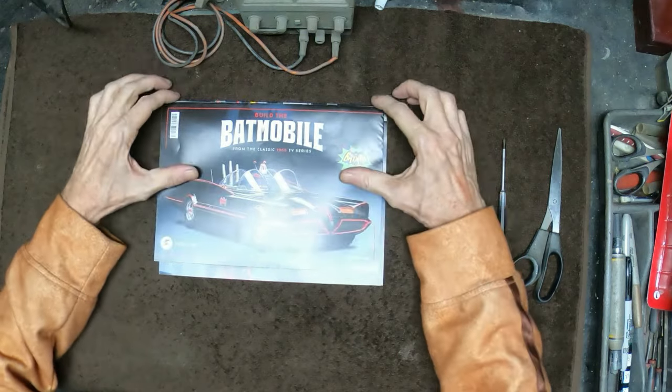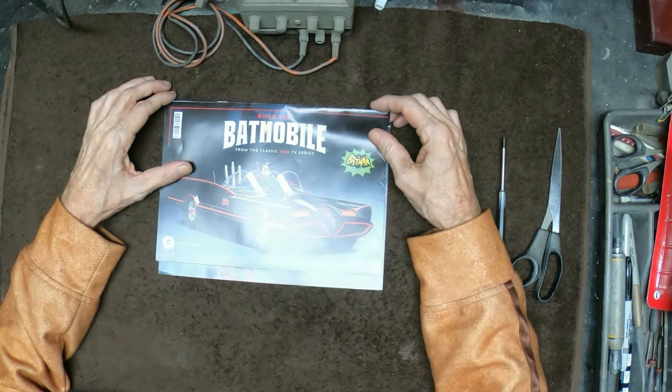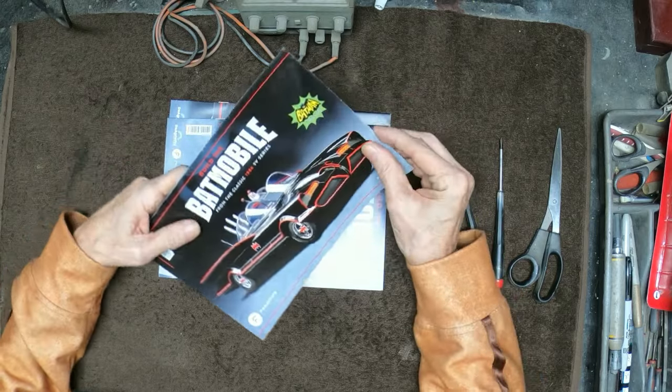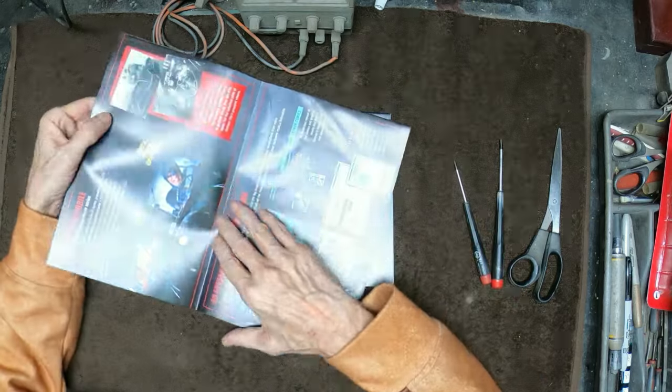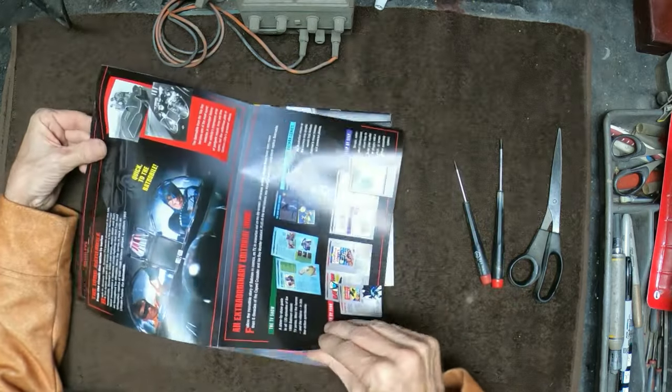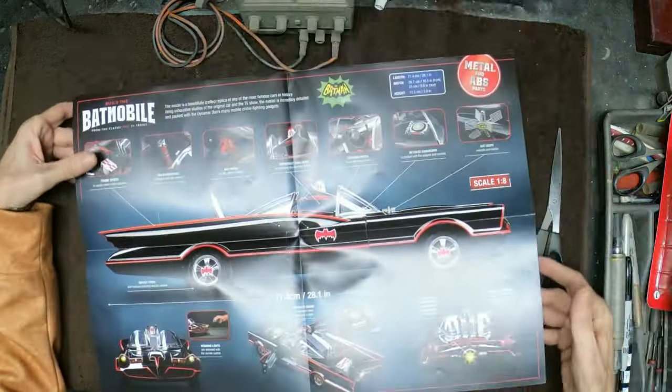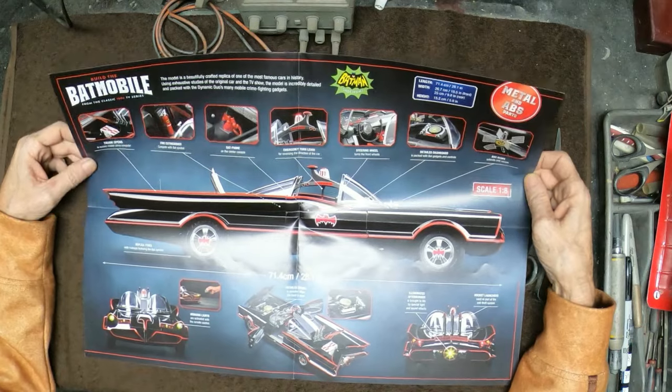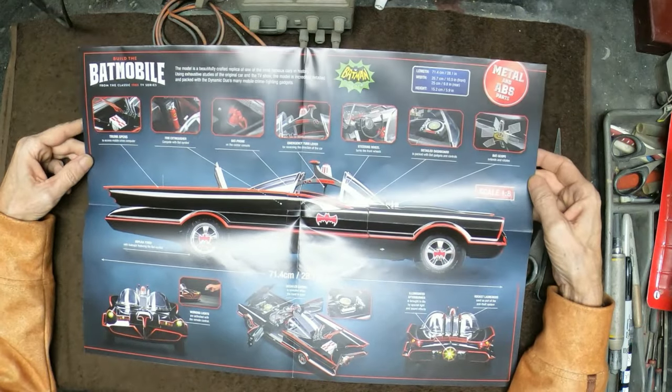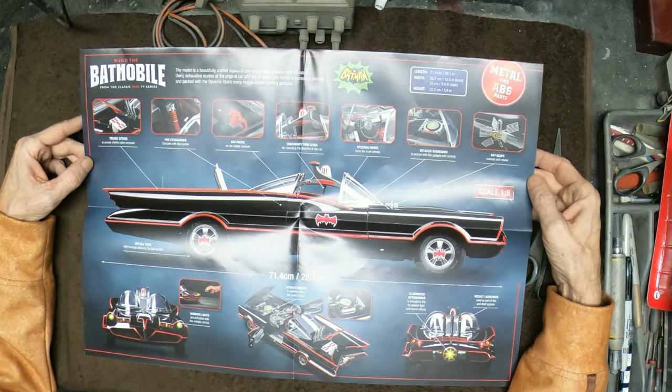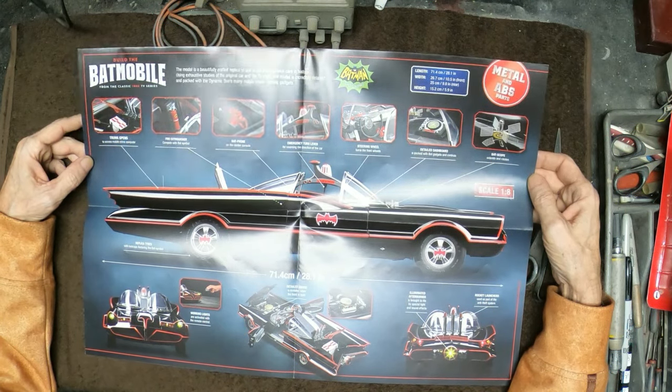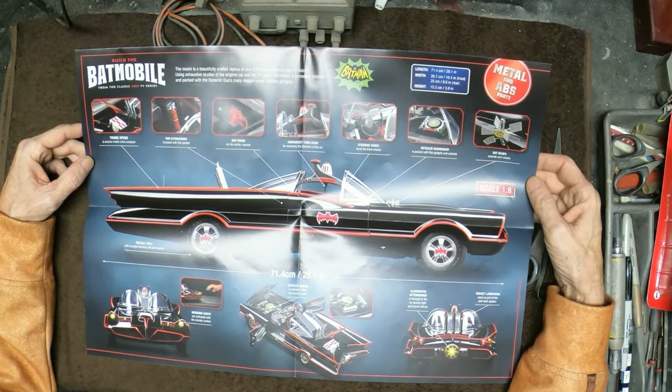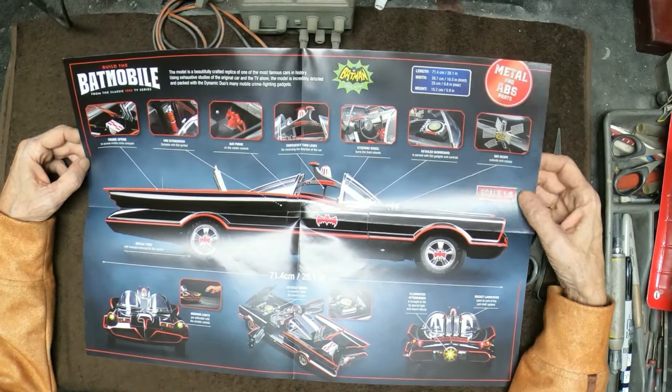I'm going to start off by showing you, in your first installment here, you get this beautiful full color poster that folds out into several sections. It's so large that I won't be able to get it into the entire screen. They have gone to great lengths to capture every single detail of the original Batmobile. The car measures out to 28 inches long when it's finished. So this is a huge model. It's 1-8 scale.